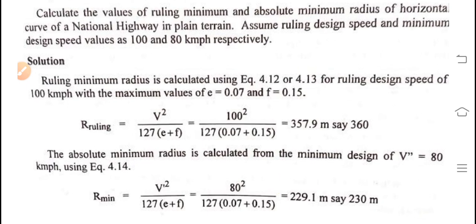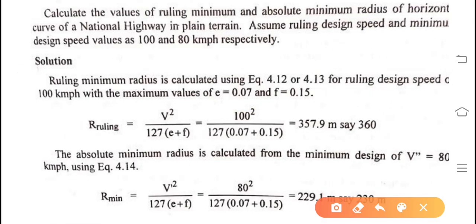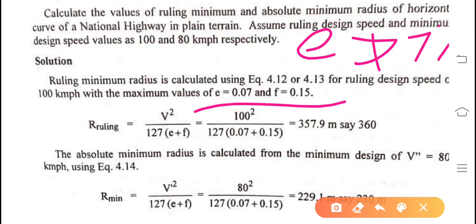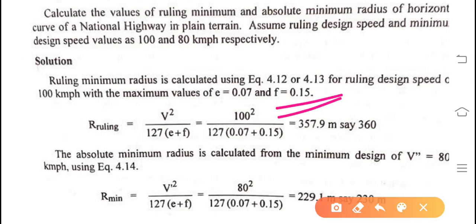For ruling minimum radius, use the ruling design speed of 100 km/h with maximum values of e = 0.07 and f = 0.15. Even if not given, you must remember and take these values. e is taken as 7 percent because super elevation seldom exceeds 7 percent, and f = 0.15 as per IRC.